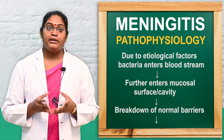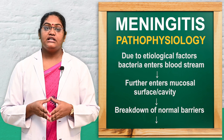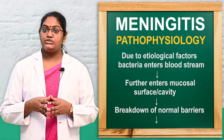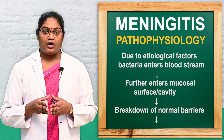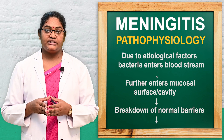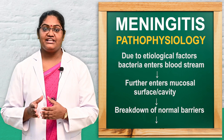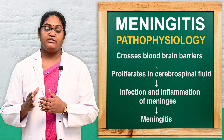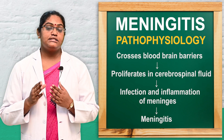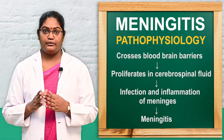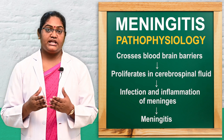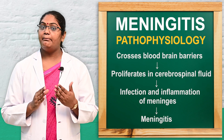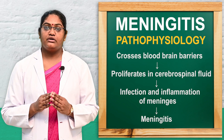Next we will discuss the pathophysiology of meningitis. Due to etiological factors, bacteria enter into the bloodstream, which leads to entry into the mucosal layer or mucosal cavity, causing breakdown of the normal barrier. When the normal barrier breaks down, it leads to crossing of the blood-brain barrier and proliferation of bacteria in the CSF — cerebrospinal fluid. This proliferation leads to infection and inflammation of the meninges, resulting in meningitis.